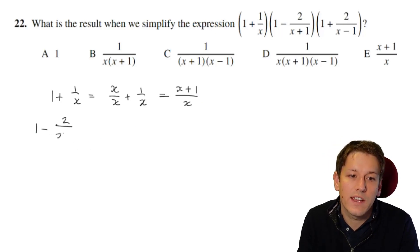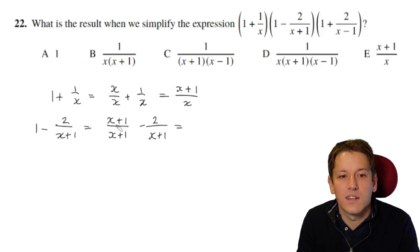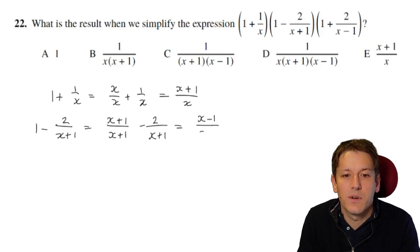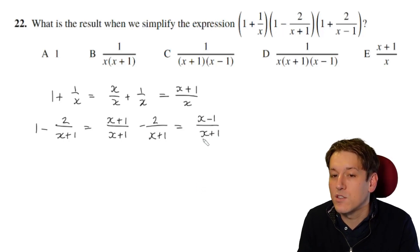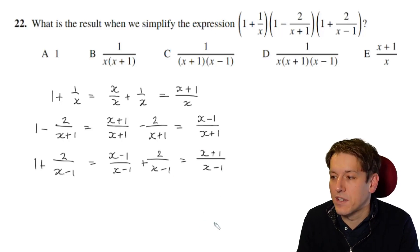So 1 plus 1 over x, I could say the 1 is x over x. So I've got x over x plus 1 over x, and that gives me x plus 1 over x. For 1 minus 2 over x plus 1, if we try and do the same thing, if I put it over the denominator x plus 1, I'd have x plus 1 over x plus 1 minus 2 over x plus 1, and that's going to give x plus 1 minus 2 on the top. So that's x minus 1 over x plus 1. And then for the final one, 1 plus 2 over x minus 1, that's going to be x minus 1 over x minus 1, so that will give me x plus 1 over x minus 1.